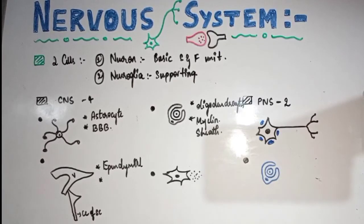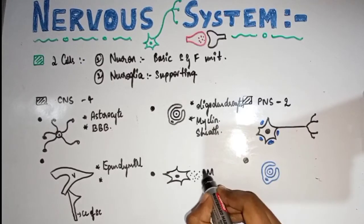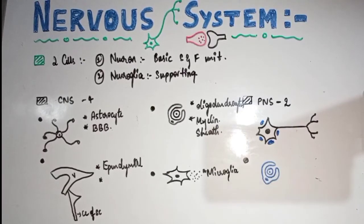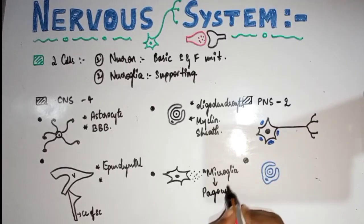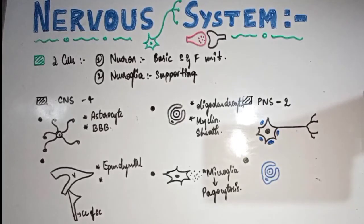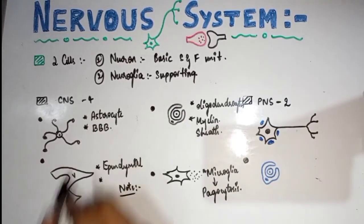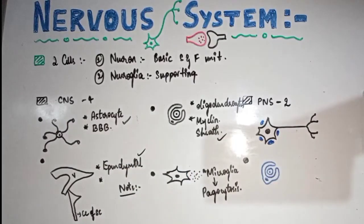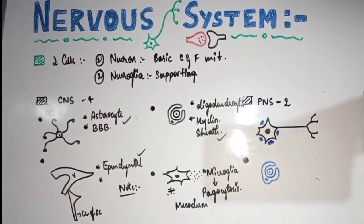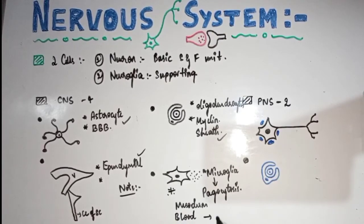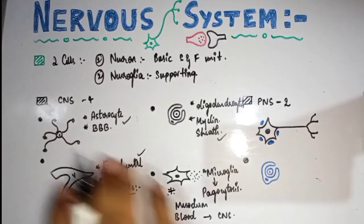The fourth type of CNS neuroglia is microglia. These are derived from fetal monocytes — blood cells, WBCs — and are involved in phagocytosis, removing foreign materials and infections. Important note: astrocytes, ependymal cells, and oligodendrocytes are all derived from ectoderm, but microglia are derived from mesoderm, because they originate from fetal monocytes that migrate from blood into the CNS.